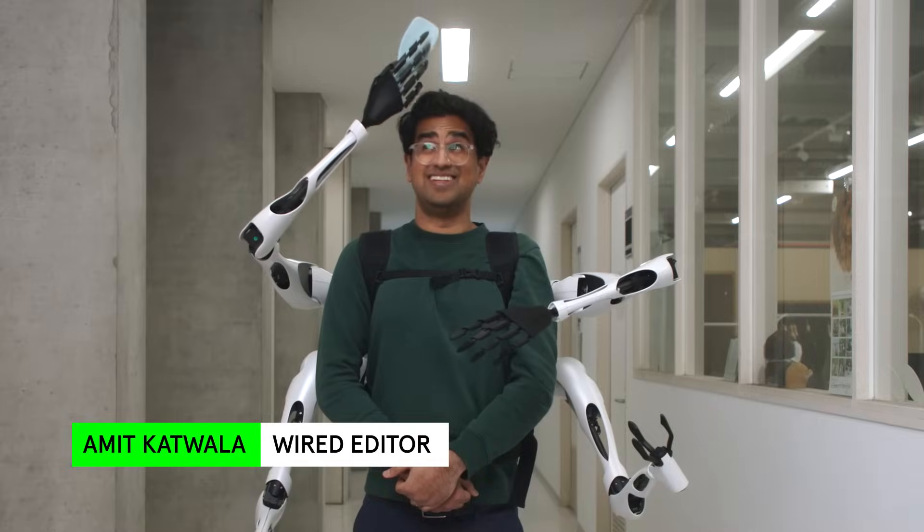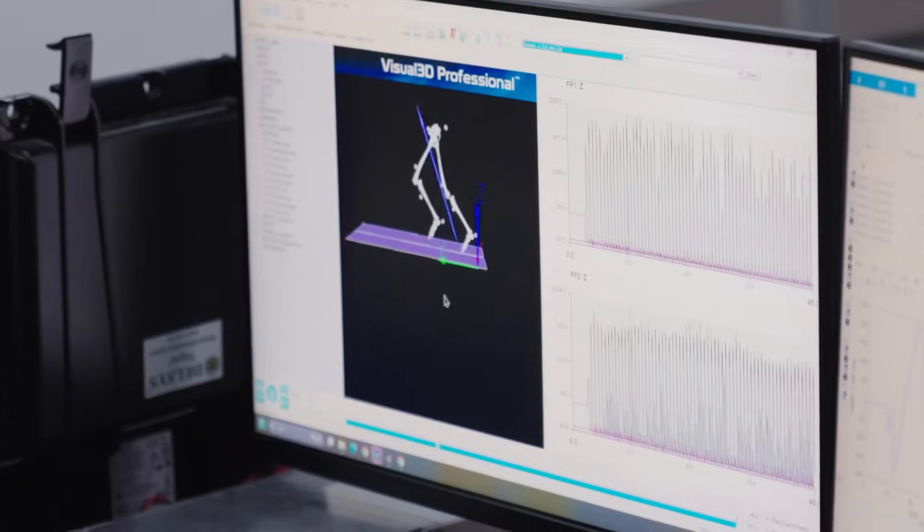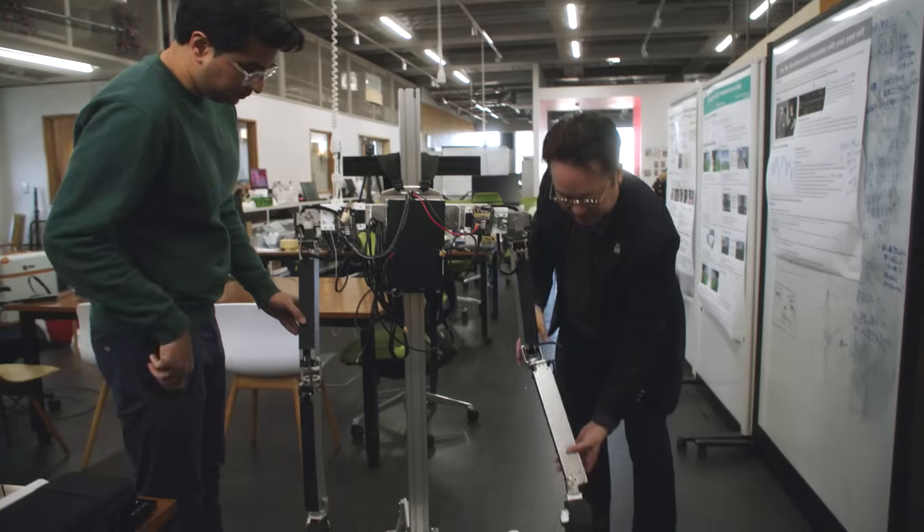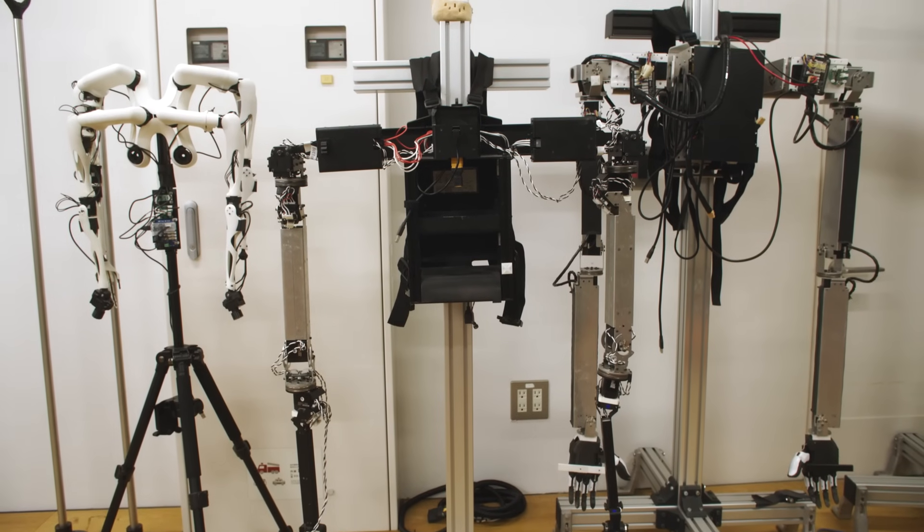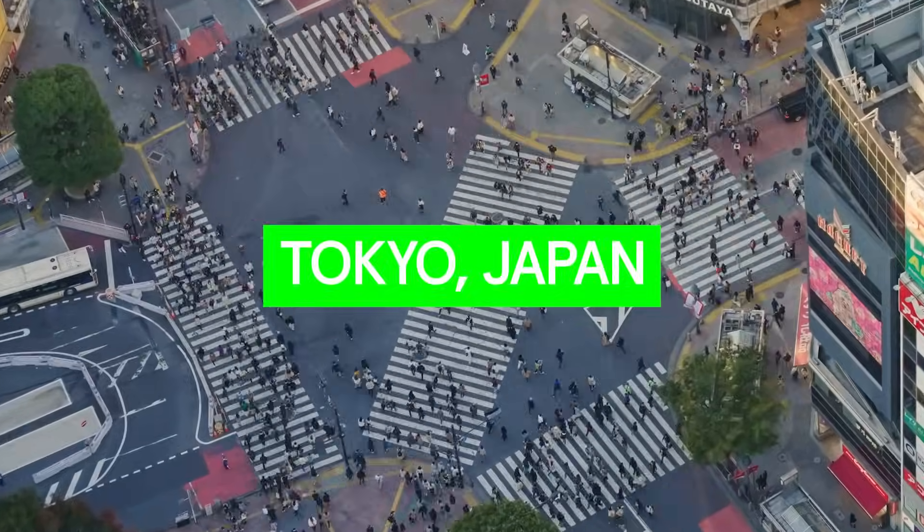I'm Amit Katwala, I'm a writer and editor for Wired, and I've always been fascinated by how technology can enhance human performance. So when I heard that a team of researchers at the University of Tokyo were working on a set of wearable robotic arms, I just had to go and find out more.